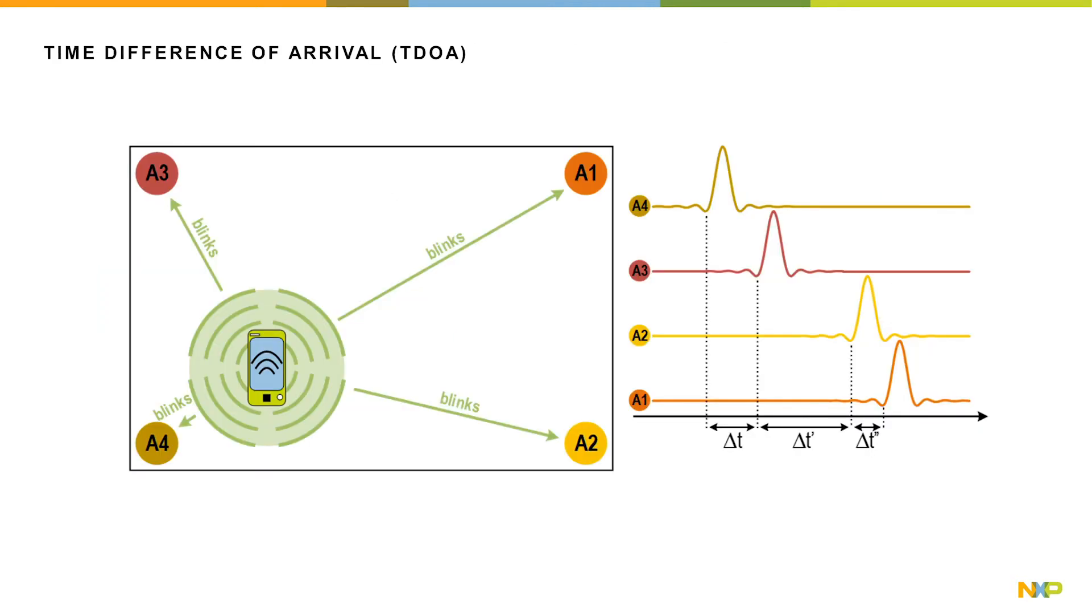Another ranging technique is time difference of arrival or TDOA. TDOA is normally used for indoor location services or navigation use cases. The initiator sends out data packets as blinks and the anchors don't respond to them. The time difference of arrival method estimates the location of the initiator by using the difference of the timestamps between the anchors, which have a known location.